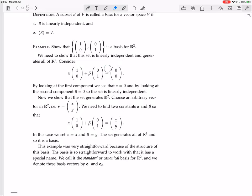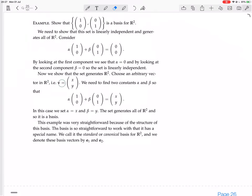First, to check linear independence, we look at this linear combination setting it equal to zero. You can see by inspection that you're going to have alpha equals 0 and beta equals 0. Now we show that the set generates R². Choose an arbitrary vector (x,y). We need to find two constants alpha and beta so that alpha times (1,0) plus beta times (0,1) equals (x,y). That's easy because you just choose alpha equal to x and beta equal to y. So the set generates all of R² and so it is a basis.